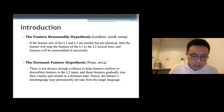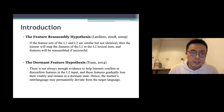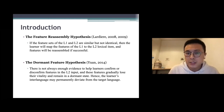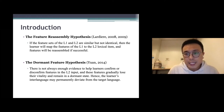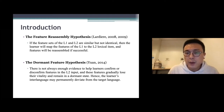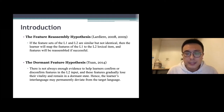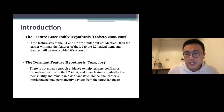The feature reassembly hypothesis explains that if the feature sets of the L1 and L2 are similar but not identical, then the learner will map the features of the L1 to the L2 lexical item, and the feature will be reassembled if successful.